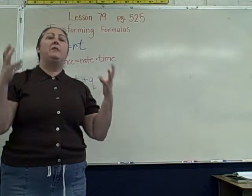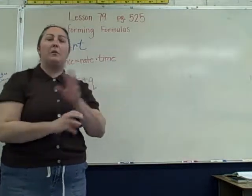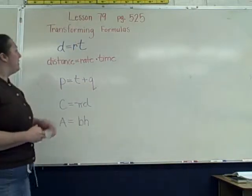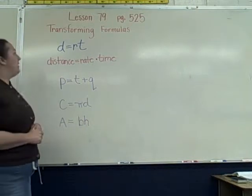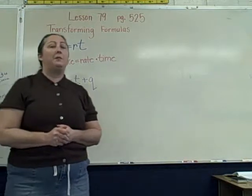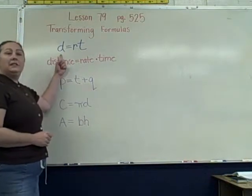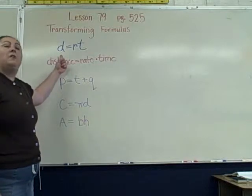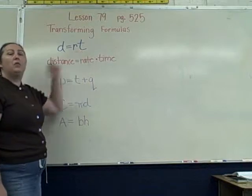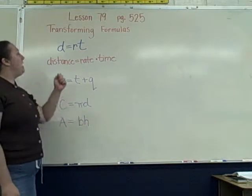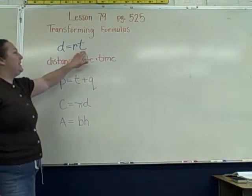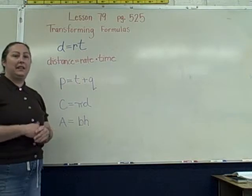What we're going to do is take a formula and rearrange the variables to get a different variable by itself. Here are four formulas on the board, three of which you should be pretty familiar with. The first is distance equals rate times time. Distance is the variable by itself — we multiply rate times time to find the distance.